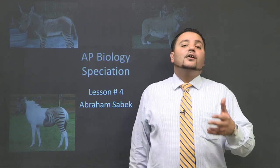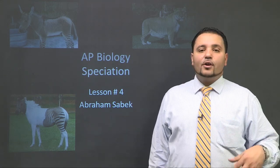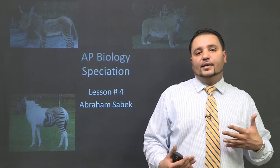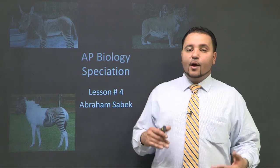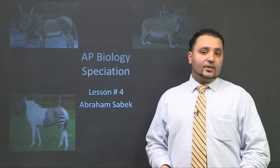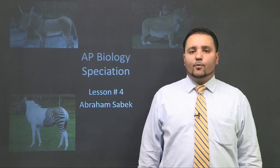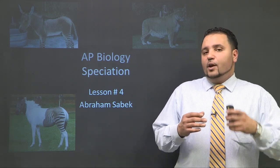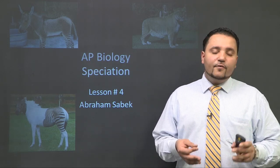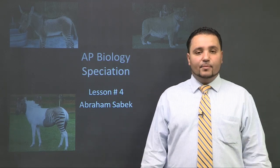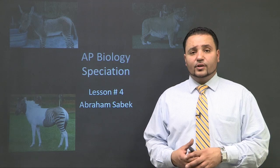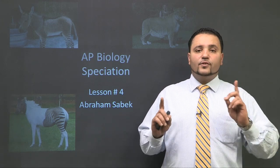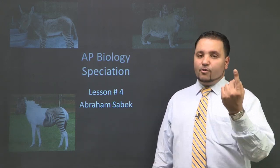Hello everyone and welcome back to AP Biology. In this lecture I'm going to go over the fact of speciation. In our last lecture we went over the evolution of populations, and this segues perfectly into that. What I want to do is talk about how a new species is actually created. This is what Darwin was trying to figure out when he wrote his Origin of Species. We're going to explore reproductive barriers, allopatric speciation, and sympatric speciation — two different forms of creating a new species. The first one deals with a geographic barrier.